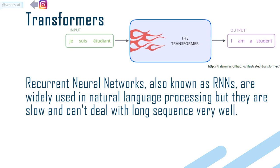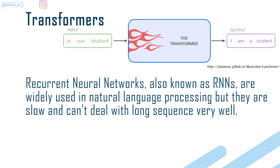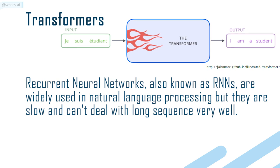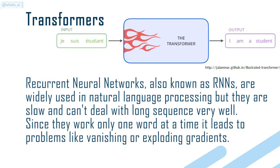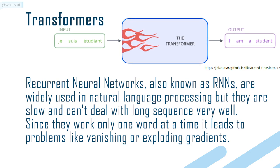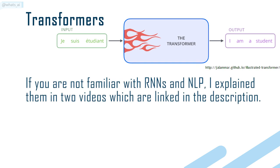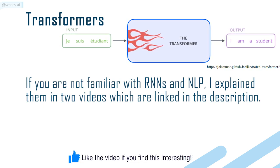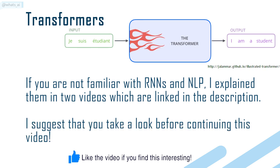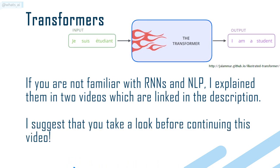Recurrent neural networks, also known as RNNs, are widely used in natural language processing, but they are slow and can't deal with long sentences very well. Since they work only one word at a time, it leads to problems like vanishing or exploding gradients. If you are not familiar with RNNs and NLP, I explain them in two videos which are linked in the description. I suggest that you take a look before continuing this video.